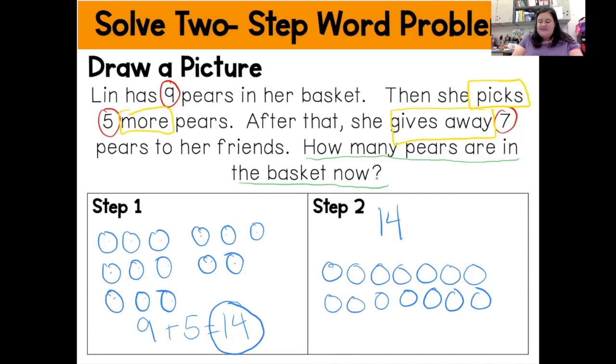And then reading that third sentence, this is after that. So that's an example that this is going to be part of my second step. It says she gives away seven of the pears. Well, if you're giving away seven pears, that means you're taking, she's, Lin is taking away from her pears that are in her basket. So I'm going to cross out seven. So one, two, three, four, five, six, seven. So when I take away, I'm subtracting. So how many pears does she have left? One, two, three, four, five, six, seven. So Lin has seven pears left.